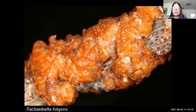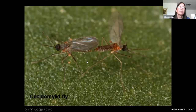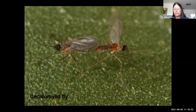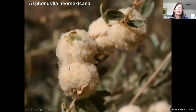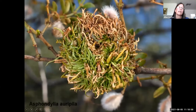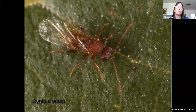Among gall formers, galls can be formed by viruses, fungi, mites, or insects. One major group is gall midges — here's a pair. Among the most conspicuous galls in the southwestern deserts are the fuzzy structures on saltbushes, formed by those little gall midges. Another frequently seen gall in the low desert is on creosote bushes — also formed by gall midges. But the real masters of gall formation among insects are cynipid wasps.